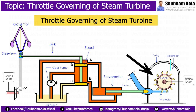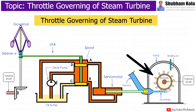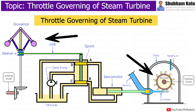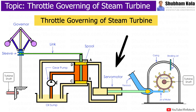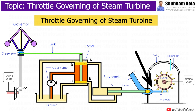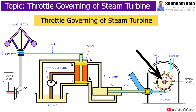Ultimately, the system will reach equilibrium again. When the power developed by the turbine equals the load on the turbine, the oil ports are covered and the servo motor is locked. In this way, with the help of throttle governing, we can control the power output of the turbine according to the load on the alternator, by keeping the rotational speed of the turbine constant.